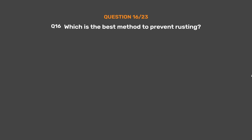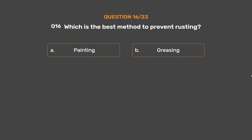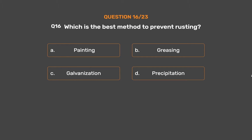Question number 16. Which is the best method to prevent rusting? Option A: Painting. Option B: Greasing. Option C: Galvanization. Option D: Precipitation.